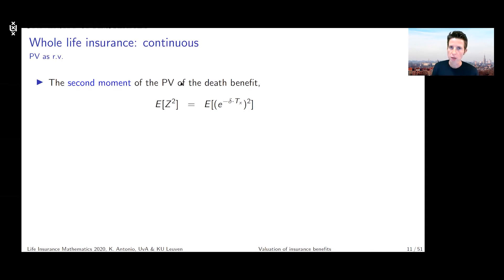If you look at the second moment of this present value random variable, then you're looking at the expected value of Z squared. Z is e to the power minus delta times Tx, so you take the square of that. You can use the same expressions as before, but instead of using a force of interest equal to delta, you should work with a force of interest equal to two times delta. We can plug in the law of the unconscious statistician.